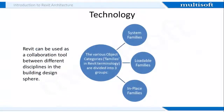Moving on to the technology part of Revit Architecture, Revit can be used as a powerful collaboration tool between different disciplines in the building design domain. The various object categories referred to as families in Revit terminology can be divided into three groups: system families, loadable families, and in-place families.